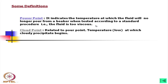Next is cloud point, which is related to pour point. Cloud point is the low temperature at which a cloudy precipitate begins. This must be above the pour point — the oil is being transferred from one beaker to another, but you will find there is some precipitation like a cloud. Basically, both pour point and cloud point are temperatures.